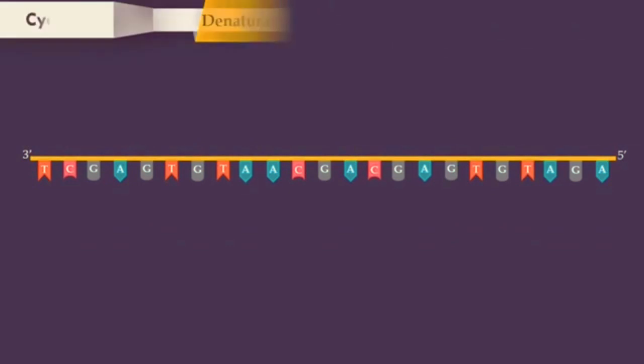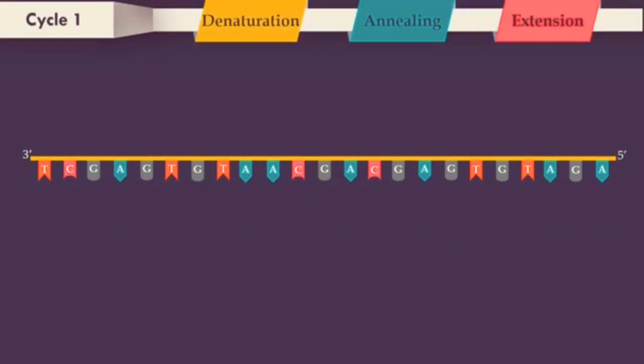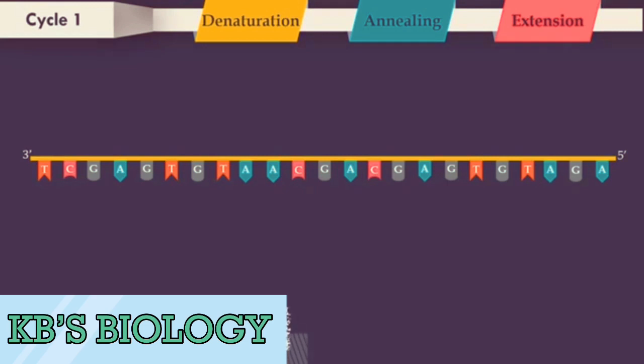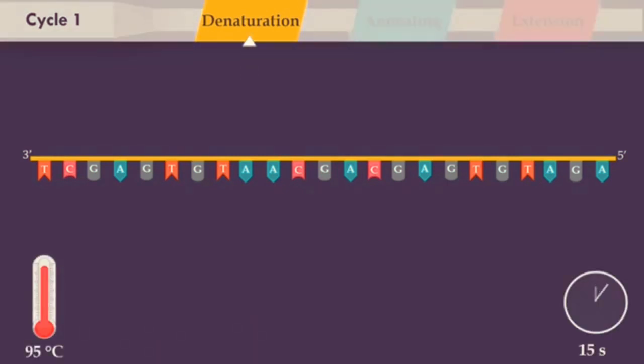PCR consists of a series of thermal cycles, with each cycle consisting of denaturation, annealing, and extension steps. Denaturation step consists of heating the reaction chamber to 95 degrees Celsius, and it is used for denaturation of the double-stranded DNA template.